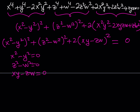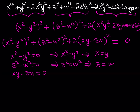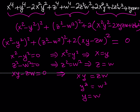Since x, y, z, w are all positive, from the first condition x squared equals y squared implies x equals y. Similarly, z squared equals w squared implies z equals w. From the third condition, xy equals zw. Replacing x with y and z with w gives y squared equals w squared, which implies y equals w. So we have x equals y, y equals z, z equals w — meaning they're all equal: x equals y equals z equals w.